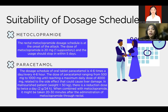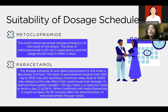The dosage of oral tablet paracetamol is 4 to 6 times a day, every 4 to 6 hours. The dosage of paracetamol ranges from 500 mg to 1,000 mg, until reaching a maximum daily dose of 4,000 mg. The schedule is related to the side effects of paracetamol that could cause liver damage. For patients below 50 kg, there is a cautionary dose reduction to twice a day, 2 g per 24 hours. When combined with metoclopramide, paracetamol should be taken 20 to 30 minutes after the administration of metoclopramide via suppository, to wait until the gastrointestinal tract returns to normal function.